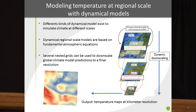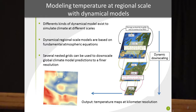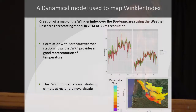First, modeling temperature at regional scale with a dynamical model. Dynamical models are based on fundamental atmospheric equations, and the principle is dynamic downscaling. Several nested grids can be used to downscale the global climate model prediction to a finer resolution, and at the end the output is temperature maps at regional scale at kilometer resolution. In this study, we use the Weather Research and Forecasting (WRF) model to map Winkler index.